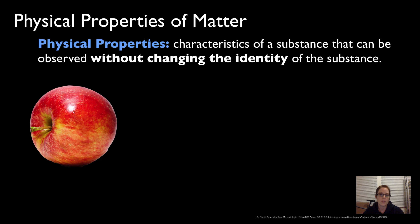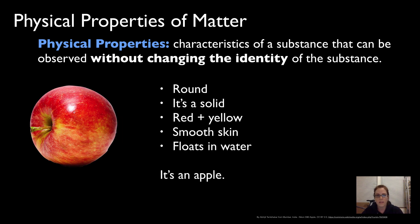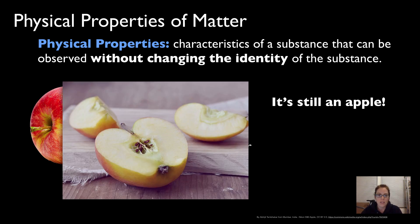Let's take an apple for example. We can describe an apple as being round, solid, yellow and red, with smooth skin — and we can see that it floats in water. Even if we cut it in half, it's still an apple. It still has those properties and retains its identity. That might seem obvious, but sometimes it's just really not obvious what the physical properties of something are.